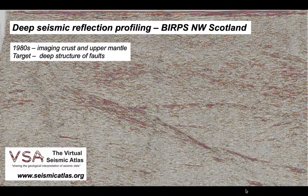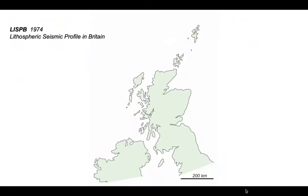This is about the 1980s and imaging the crust and upper mantle. The initial targets for these types of experiments was to image the deep structure of fault zones — faults that we knew existed from upper crustal geology. The first major seismic experiment to image crustal structure was the Lithospheric Seismic Profile in Britain, acquired in the mid-1970s.